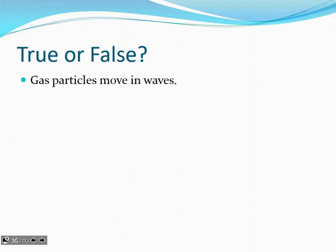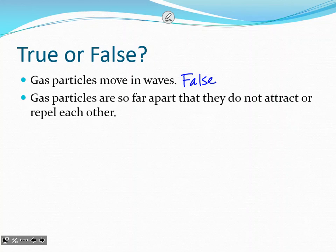First statement: gas particles move in waves — true or false? False. Gas particles travel in straight lines. They bounce and go in different directions, but they are straight lines — they do not go in waves like electrons or photons do.